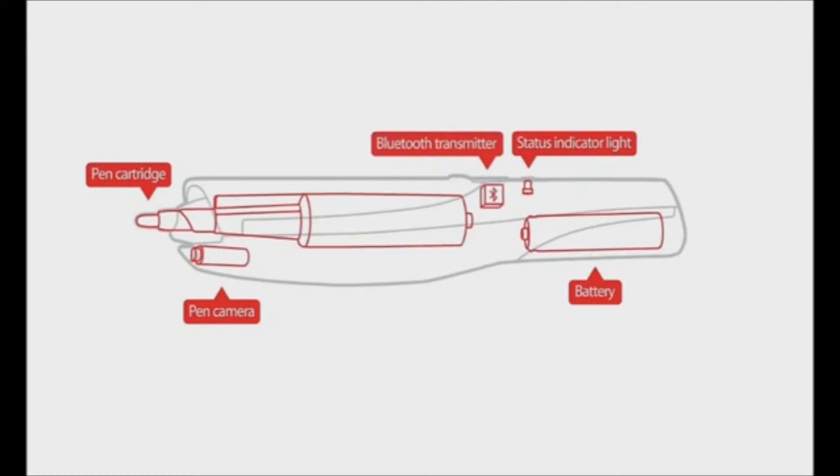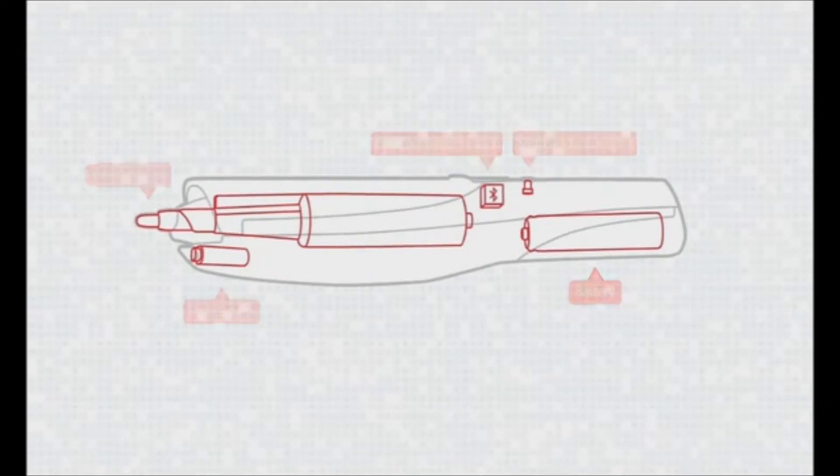A small Bluetooth transmitter enables the pen to communicate with the USB receiver. The camera at the front of the pen intuitively captures what you're writing on the digital flipchart pad simply by plotting its location on the page with the unique dot pattern. This is then transmitted to the PC via the Bluetooth antenna.